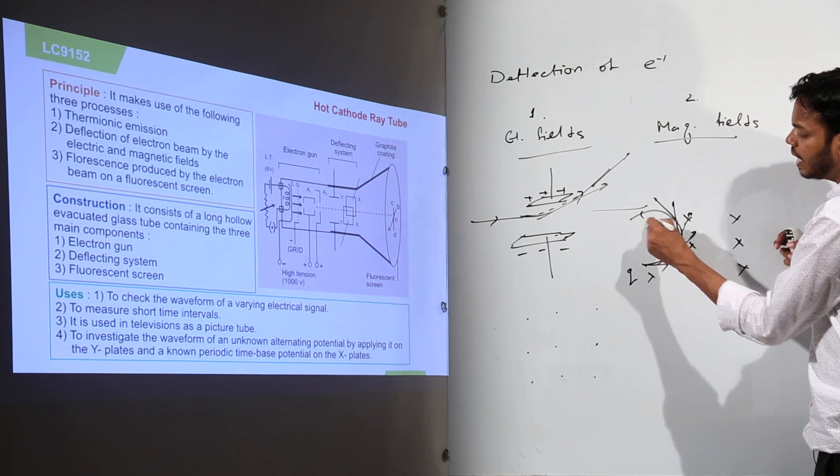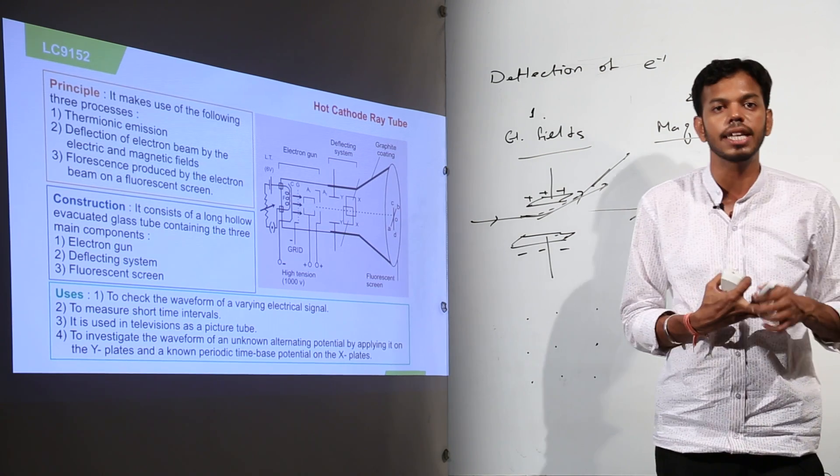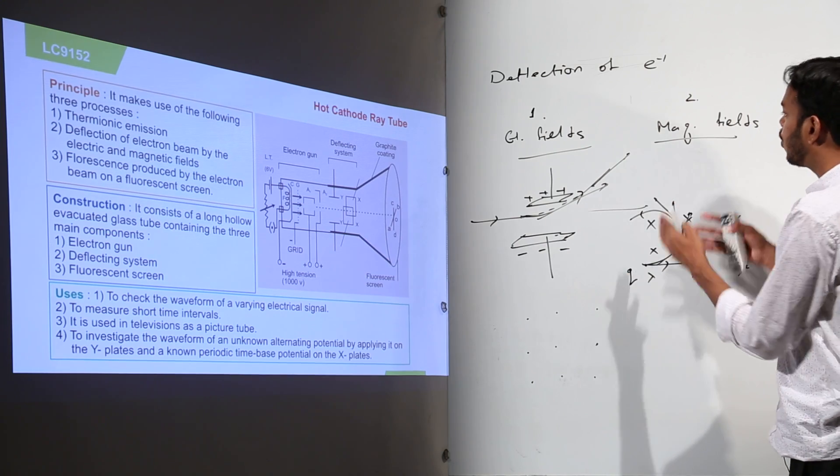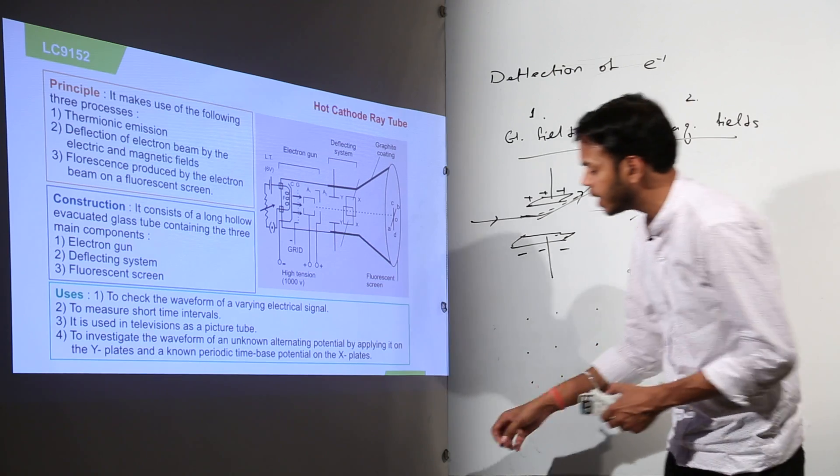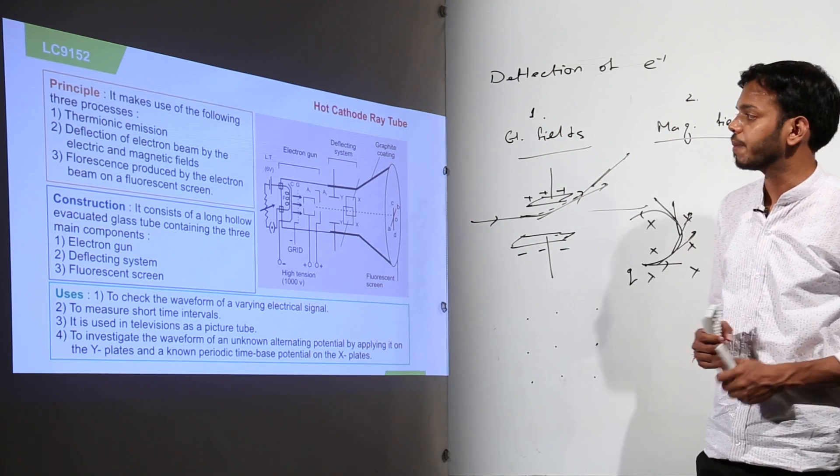But again by this law, it will start moving in upward direction and so on. So basically charge particle undergoes a circular path in magnetic field. This is how it follows. So this is how charge particles deflect in electric and magnetic field. So this was our second principle.